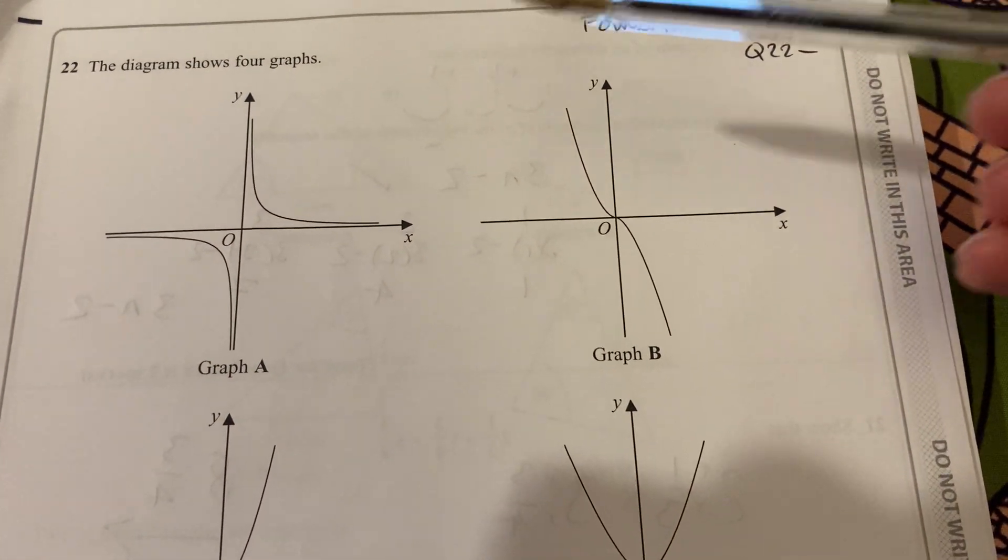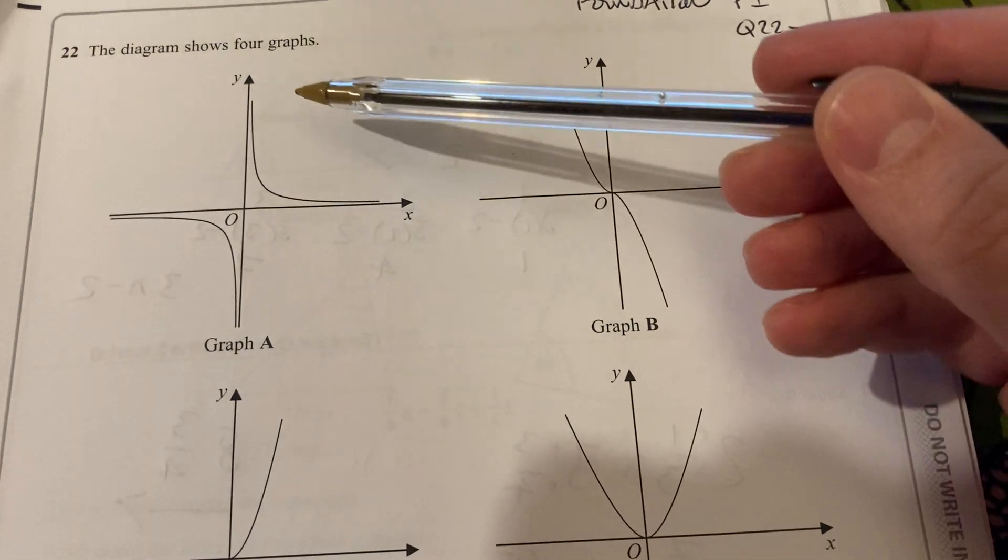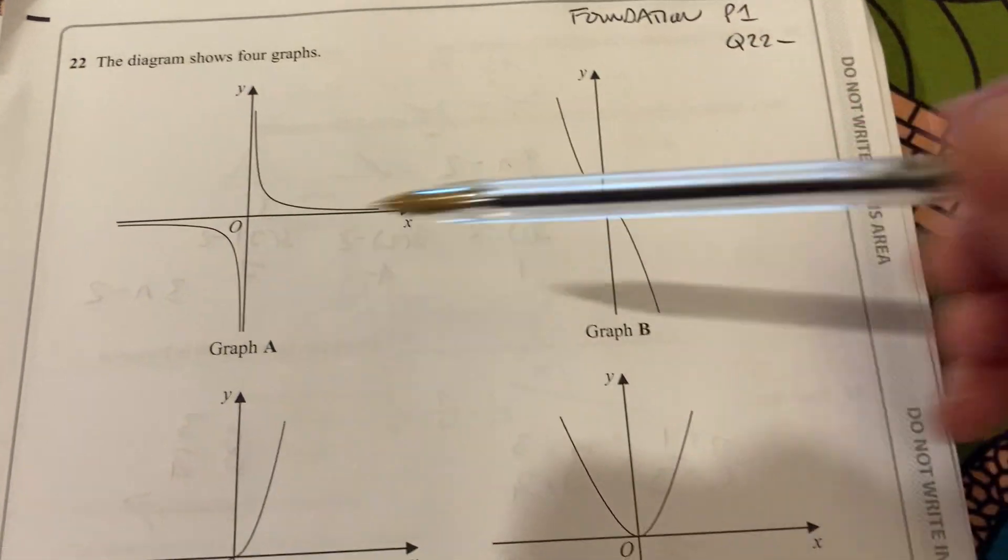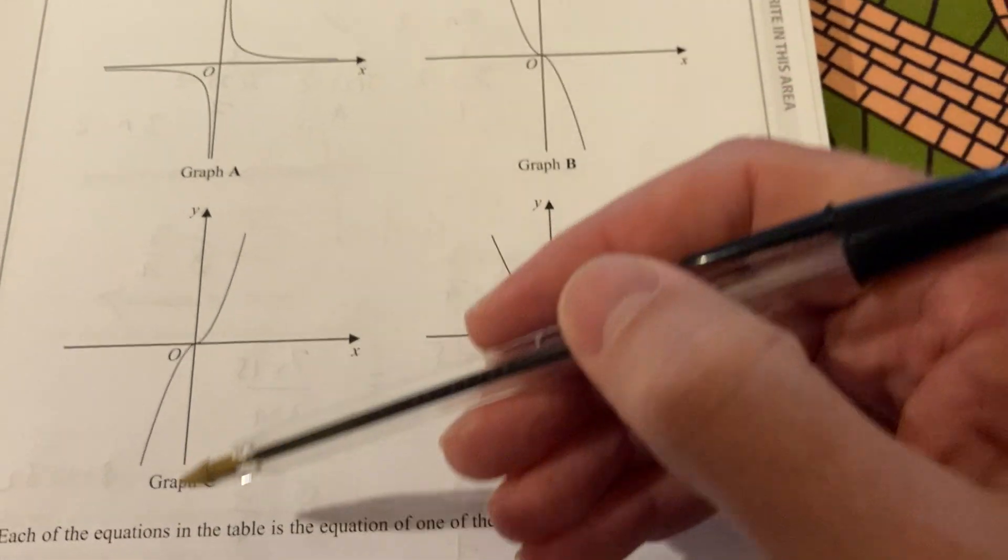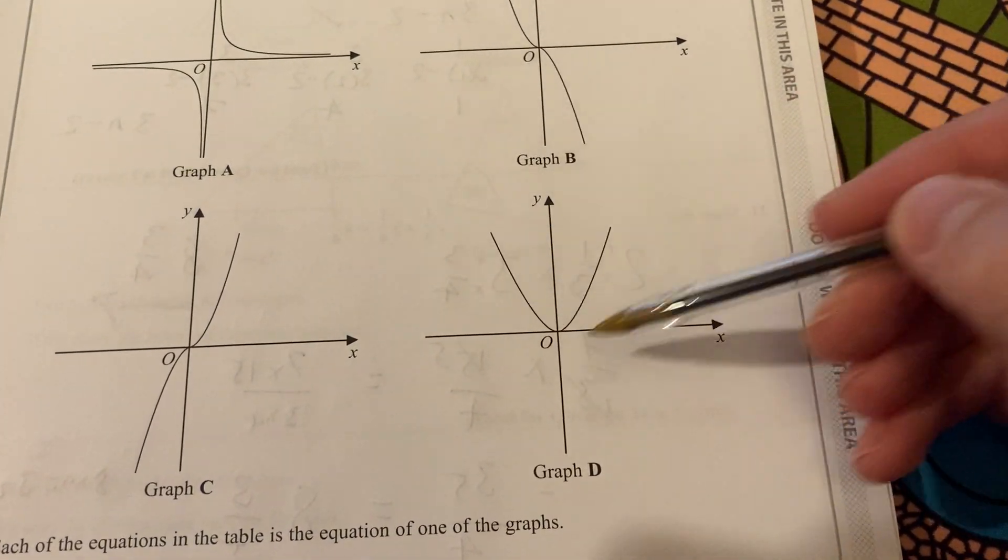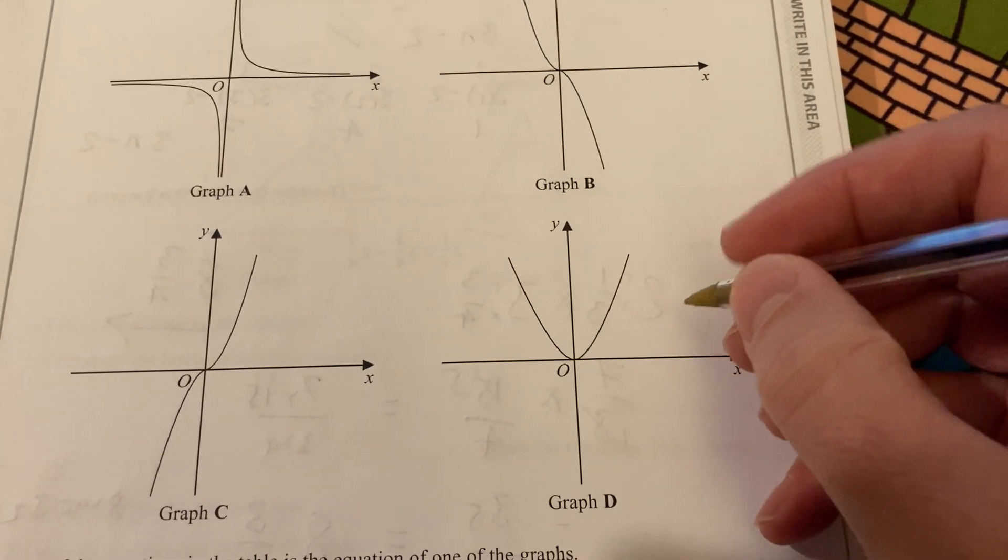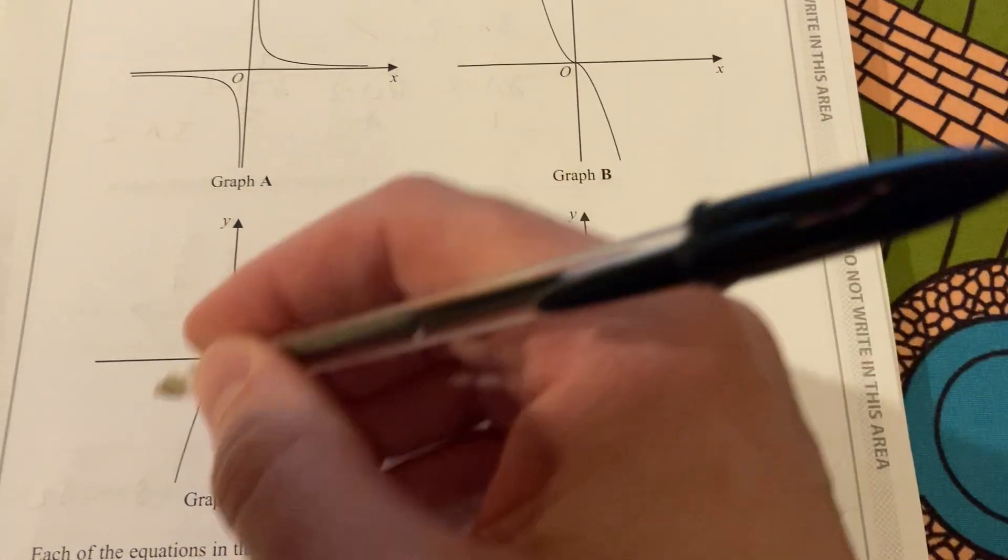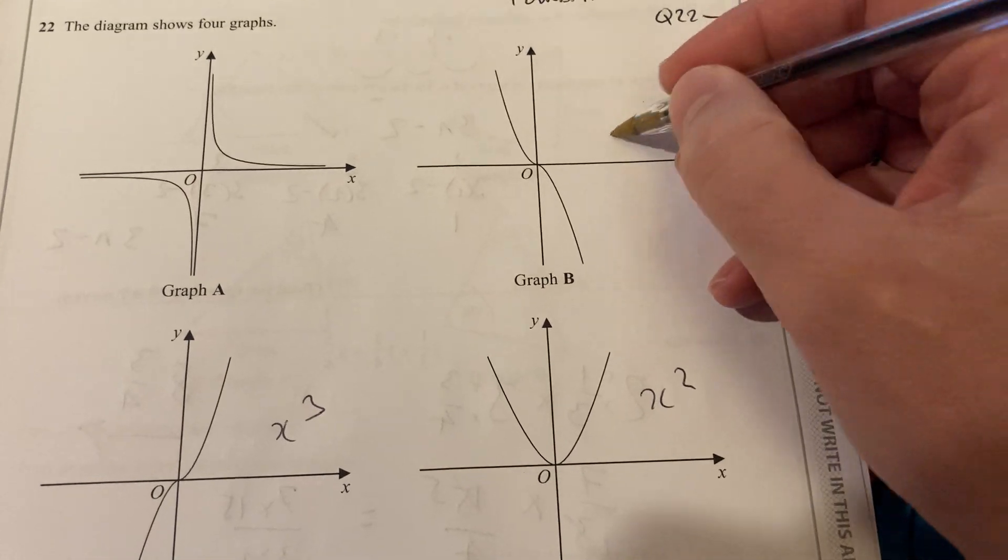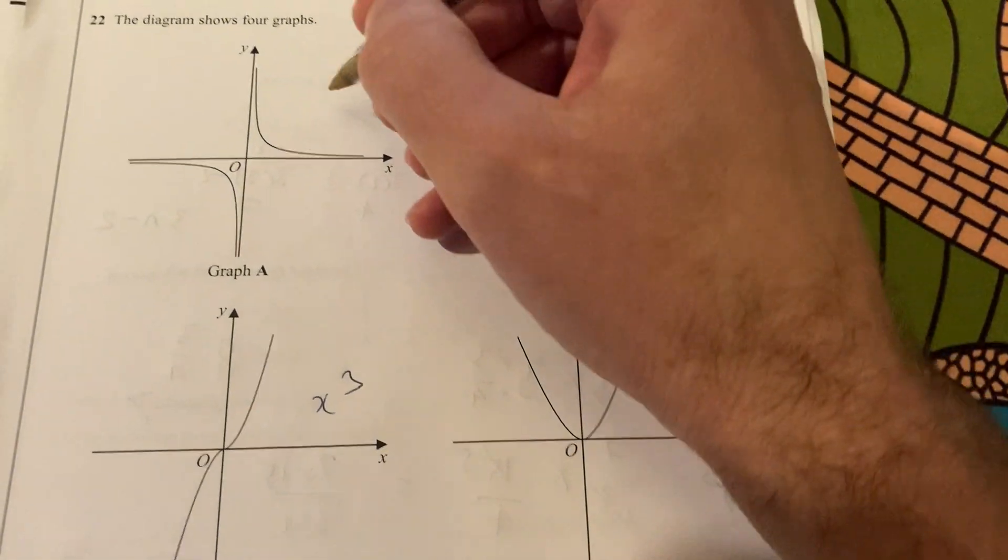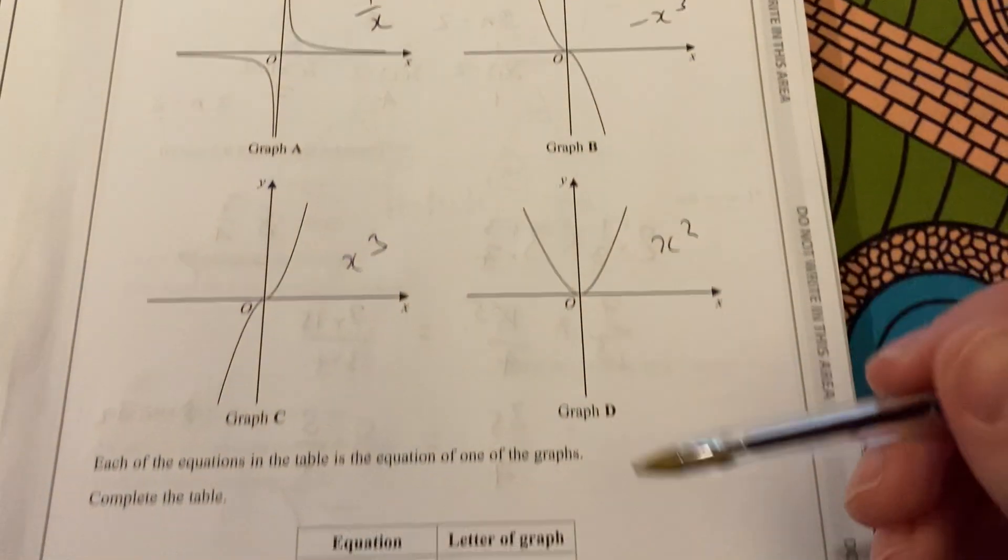And here we have diagrams of four graphs. Graph A, curving there and there. Graph B, curving down like that. Graph C, curving up like that. And graph D. Now hopefully we'll recognize this one as an x squared. This is a cubic. This is also a cubic, but it's negative. And this is the reciprocal.